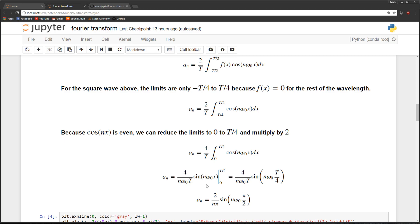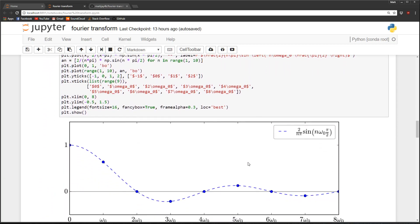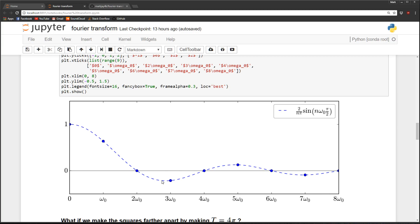So what that looks like is here. Our answer is just two over n pi times sine n omega naught pi over two. So if I were to plot this here, this is what I would get. So the blue dots are when n equals zero, one, two, three, etc. And the dashed blue line is if I were to consider n as a continuous variable. So you can see that our points are spaced by omega naught, and what you can also see is that all the even terms are zero. So that's why the square wave doesn't have any even coefficients.